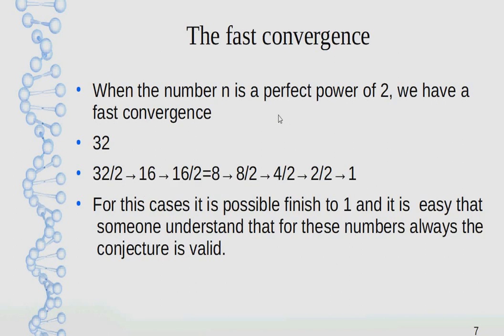The fast convergence: When the number n is a perfect power of 2, we have a fast convergence. Example: 32. 32/2→16→16/2=8→8/2→4/2→2/2→1. For these cases, it is possible to reach 1 and it is easy to understand that for these numbers the conjecture is valid.